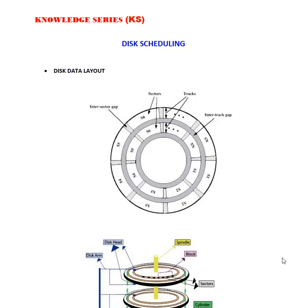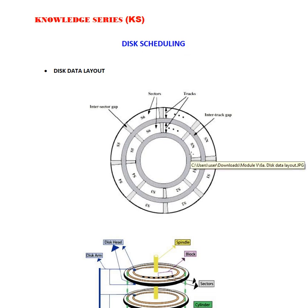Welcome to the knowledge series on disk scheduling. Scheduling means to improve the speed of systems. Disk refers to the secondary storage device in the form of a disk. If this disk can meet a particular schedule in appropriate time, that is what we term disk scheduling. In other words, disk scheduling means to improve the average disk service time. Disk scheduling is done by the operating system to schedule the input-output requests arriving from the disk.